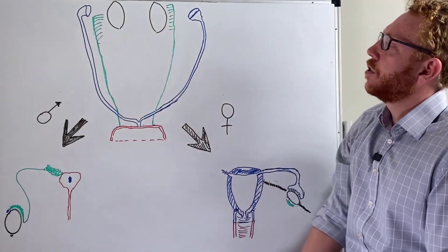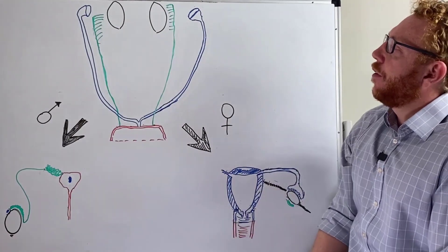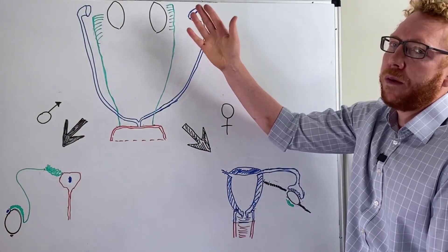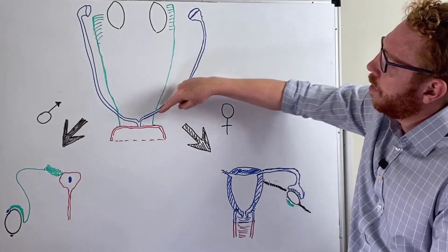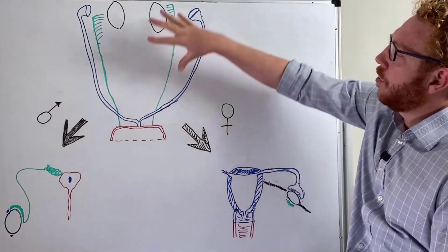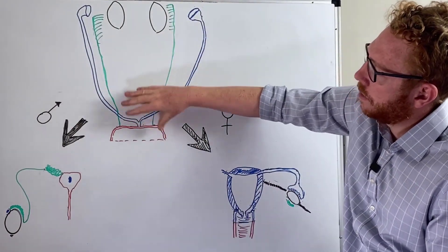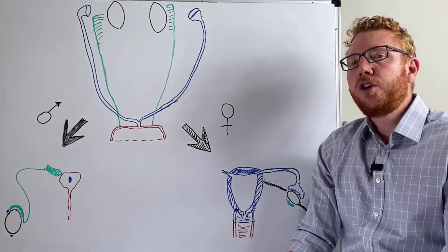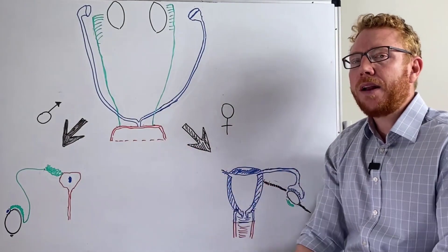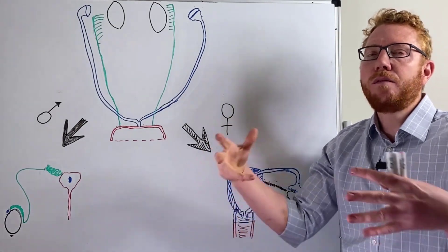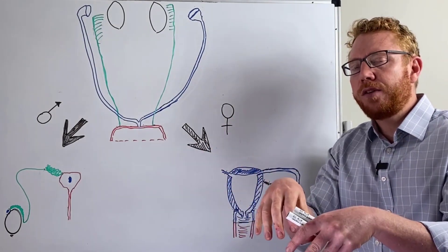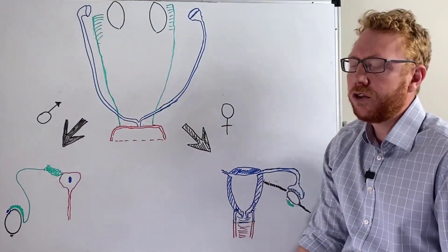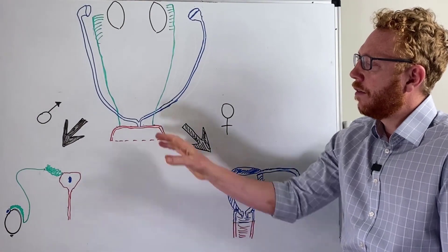There is one Wolffian duct on each side, just like the gonad. Further outside is the paramesonephric duct, another ductal system important for today, which we'll call the Müllerian duct. These ducts all come down and empty into the red structure called the urogenital sinus. This sinus was once part of the cloaca — a confluence of urinary and gastrointestinal systems — but has been separated by a septum, and is now called the urogenital sinus.